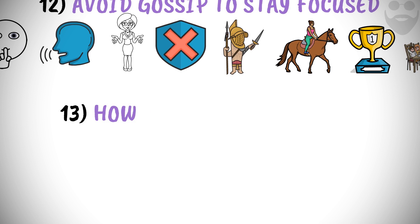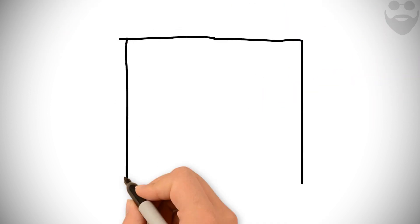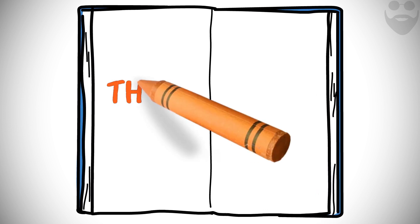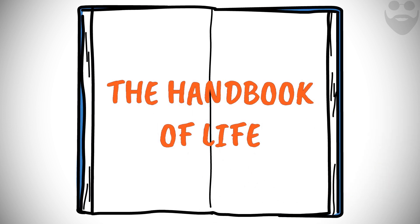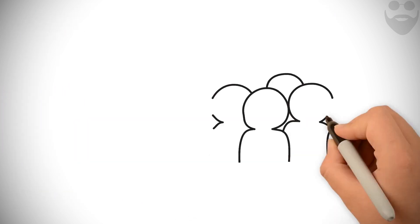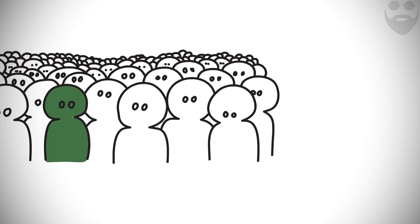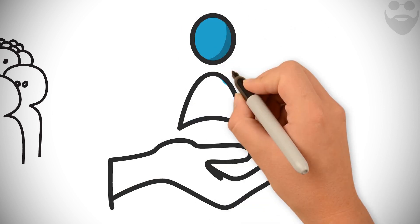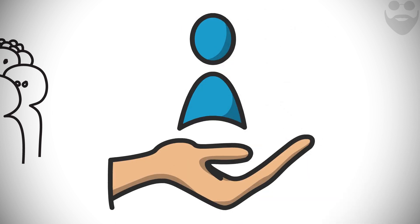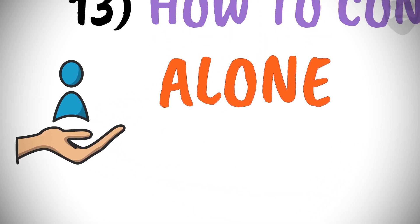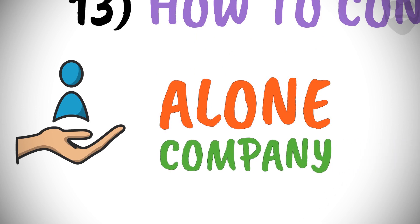13. How to conduct yourself. Enchiridion is the handbook of life, in which Epictetus suggests how to conduct yourself in a social gathering as well as alone. Immediately prescribe some character and form of conduct to yourself, which you may keep both alone and in company. Enchiridion 33.